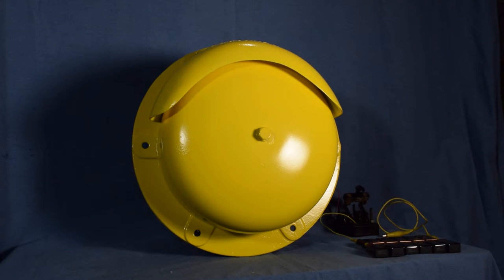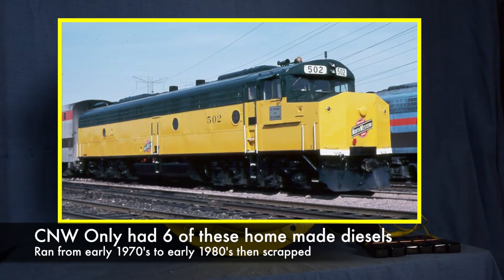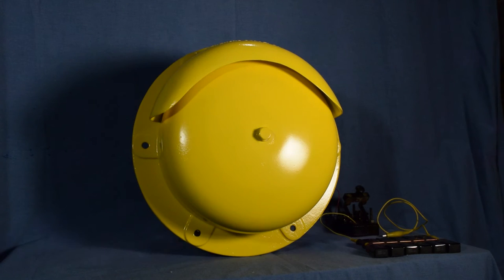In case you don't know what a Crandall cab is, it's a rebuilt E unit, which was an EB unit, a B unit, and it just had a cab placed on it. The Chicago Northwestern only had a handful of those units built, but none of them survived.